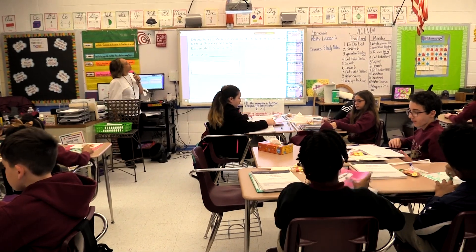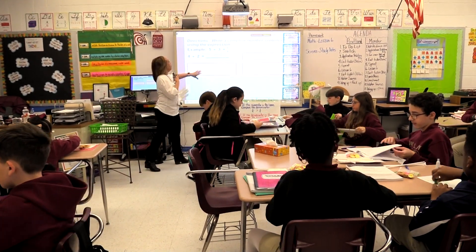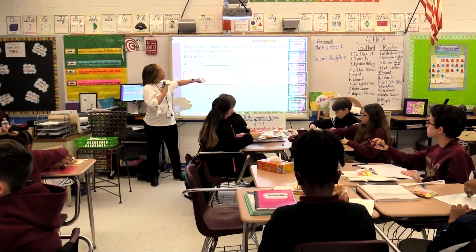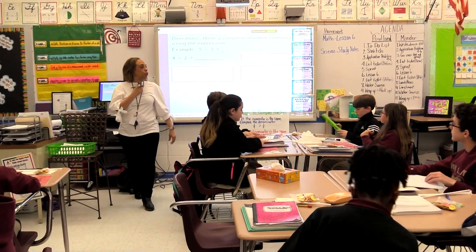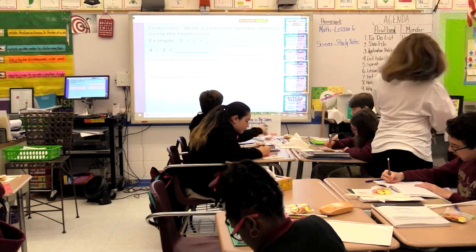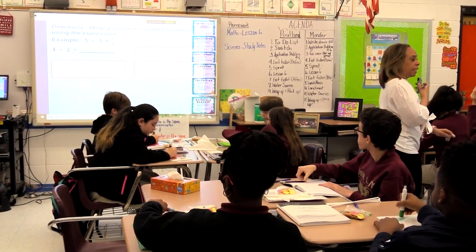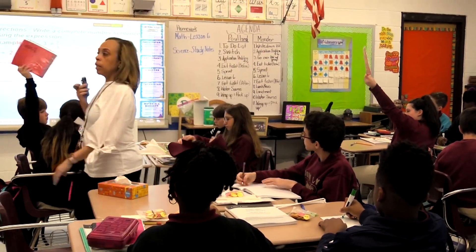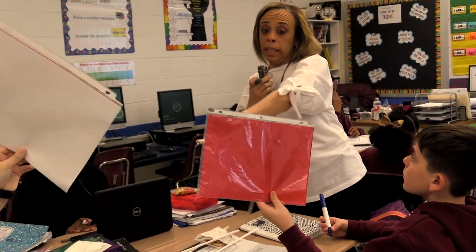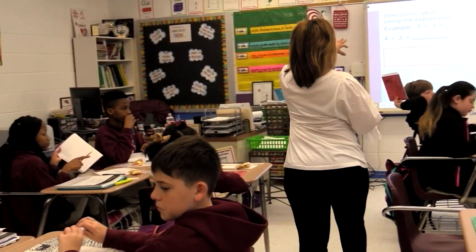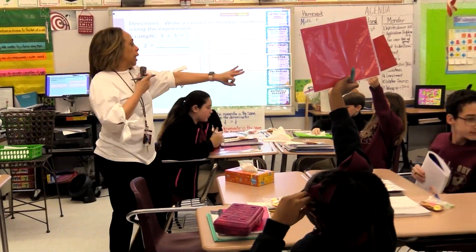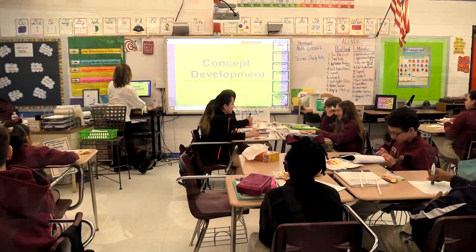On your whiteboards, real quick — write a complete number sentence using the expression. They gave you an example: five divided by three equals five thirds. First one: four divided by two. Flash it. Write a complete number sentence. Look at what the example is. I like how some of you gave me the answer.